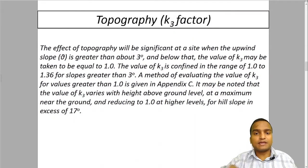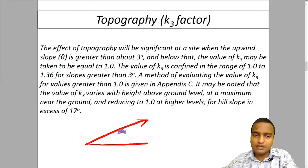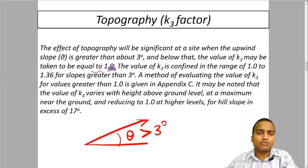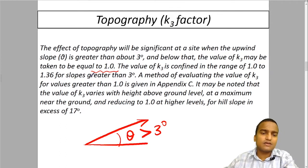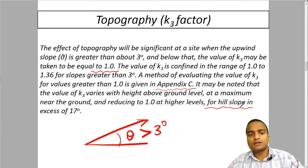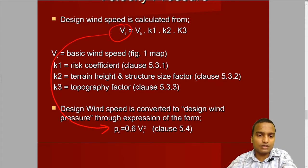Then comes the topography K3 factor. The effect of topography will be significant at a site when the upwind slope theta is greater than 3 degrees. Below that, the value of K3 is going to be equal to 1.0. The value of K3 is confined in the range of 1.0 to 1.36 for slopes greater than 3 degrees. There is a formula for calculating the value of K3 for values greater than 1.0, and that is given in appendix C. It is more important in the hilly slopes. After calculating Vz, we have to use this Vz in this formula to calculate the wind pressure Pz.